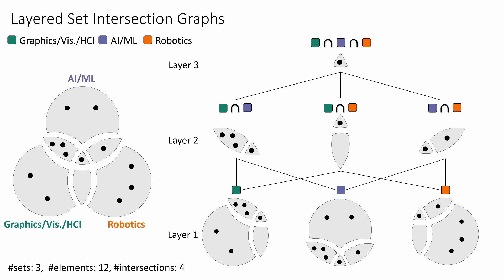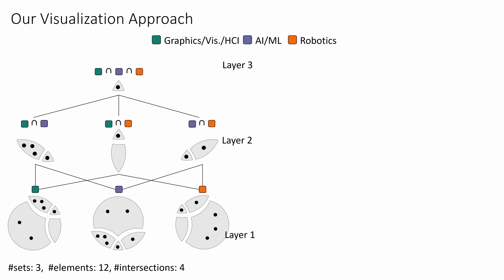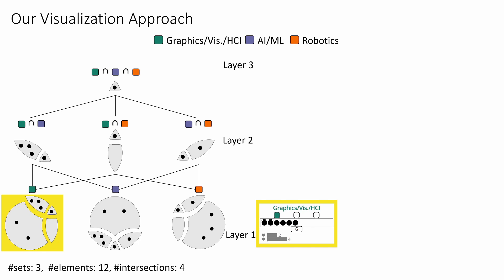We represent each node of the graph as a rectangle and place black filled circles to denote constituent elements. The cardinality of a set is shown by a number at the bottom edge of the node — for instance, there are six elements in Graphics with HCI. Circles with a hat marker above them indicate elements with no additional memberships in other sets and thus do not appear in layers above. Two circles with hat markers show that among six researchers, two published only in Graphics with HCI.